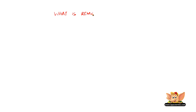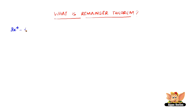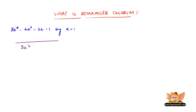Let us learn what the remainder theorem is with the help of an example. We will consider 3x to the power 4 minus 4x cube minus 3x minus 1 being divided by x minus 1, and use the long division method to divide the same.